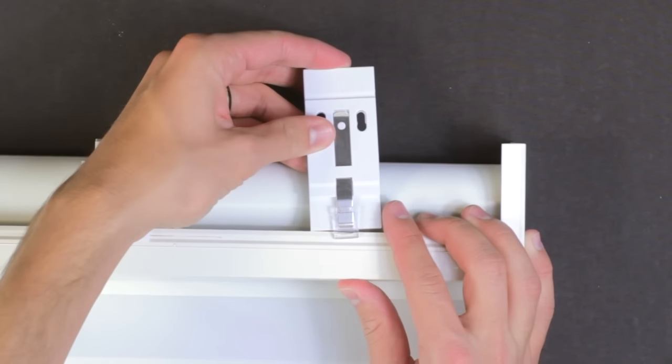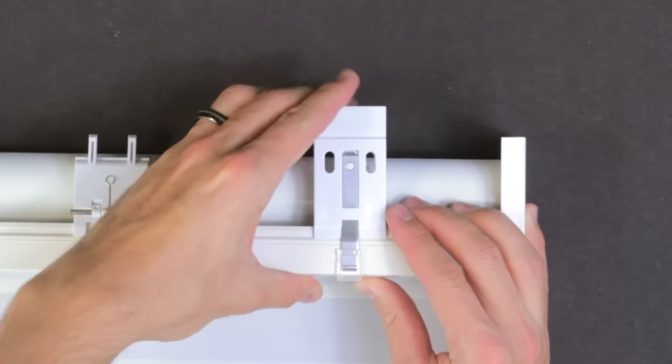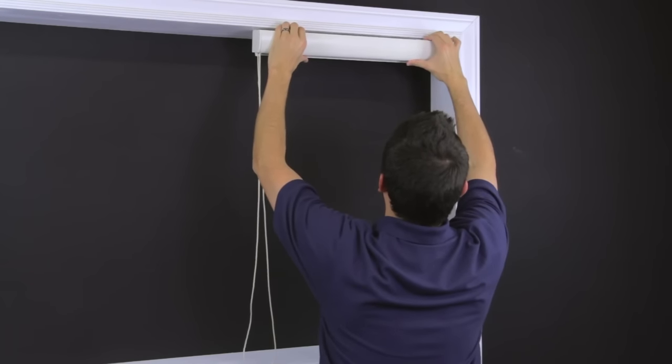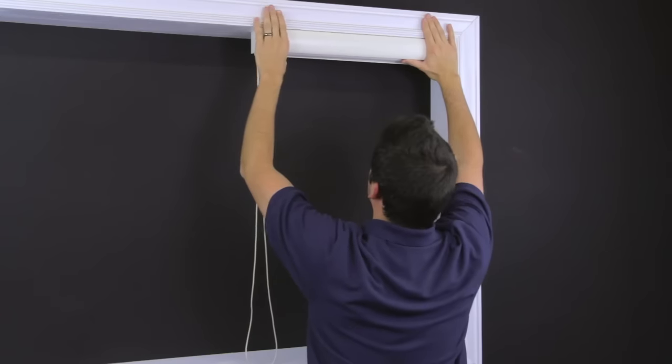To remount the shade, place the top edge of the fascia between the tab and the body of the bracket and push in until seated. This may be a little tricky depending on where the shade is mounted. You might need to do this by feeling the tab and guiding it over the top of the fascia and the fascia over the bracket body.